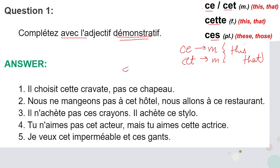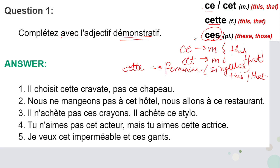Now 'cette' is used for feminine — again singular — that means it is also used for 'this' and 'that'. If you see the next one, 'ces': as you can see there is an 's' here, that means it's used for plural, and these are basically demonstrative adjectives — so 'these' and 'those' will come.